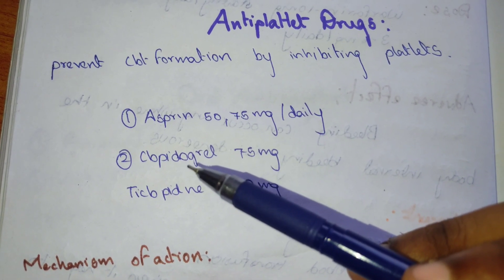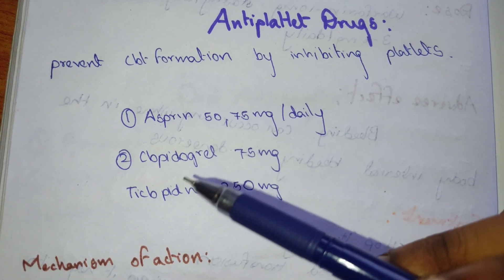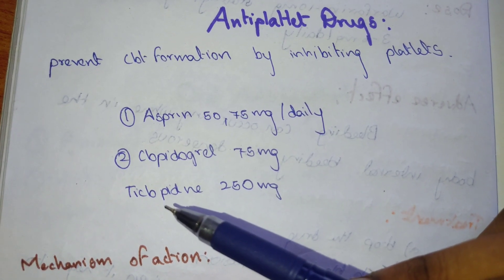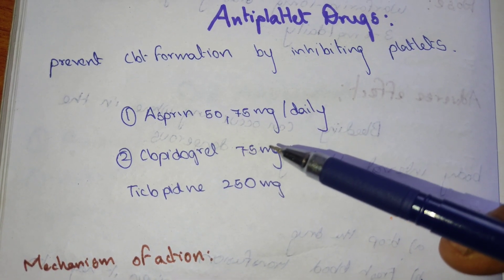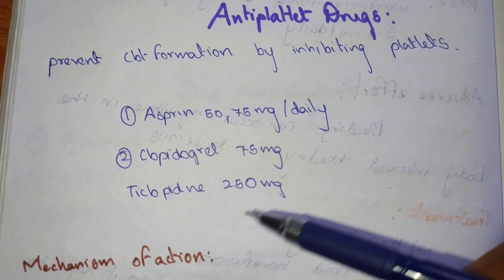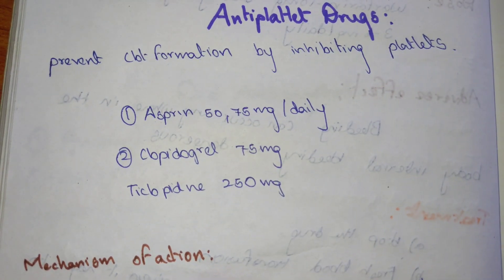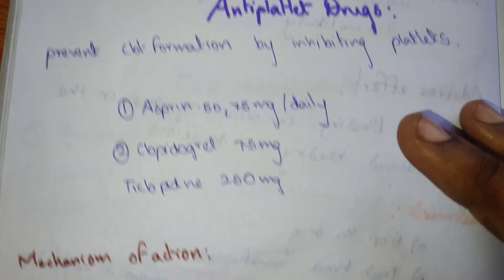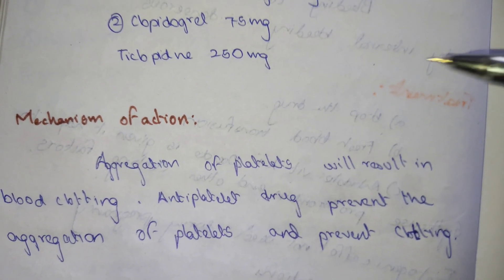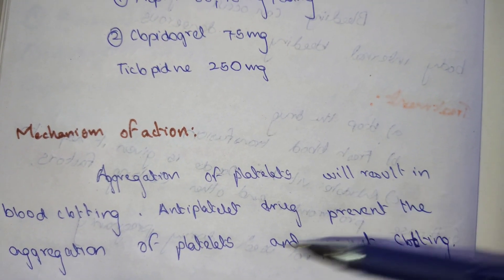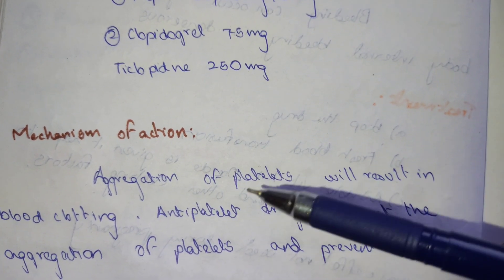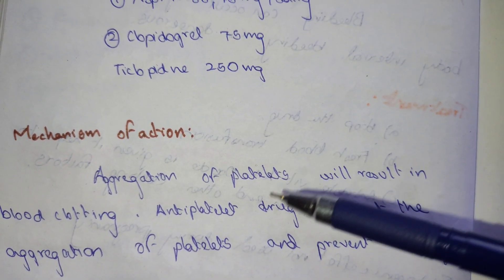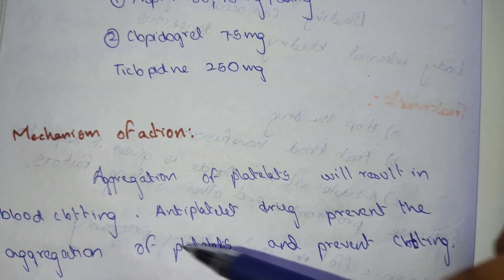Clopidogrel is given 75 mg and ticlopidine is given 250 mg. The mechanism of action: aggregation of the platelets results in blood clotting. Generally, when aggregation of the platelet occurs, it results in clotting.